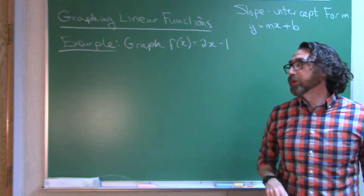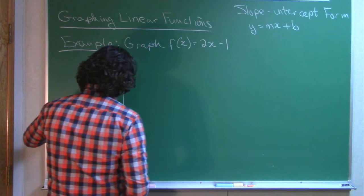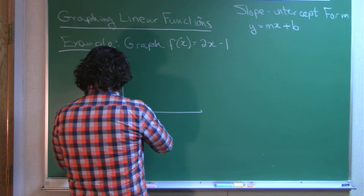We call it the slope-intercept form because you can see the slope, and you can see the y-intercept. And that makes it very easy to draw quick, yet accurate graphs for linear functions.